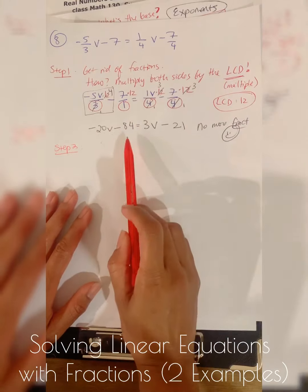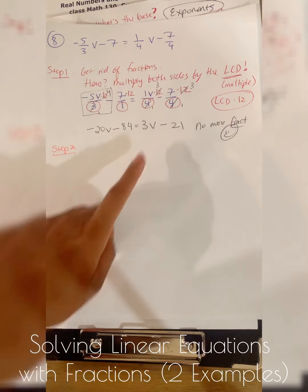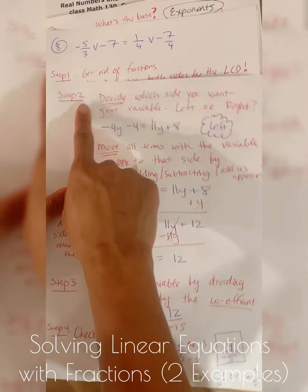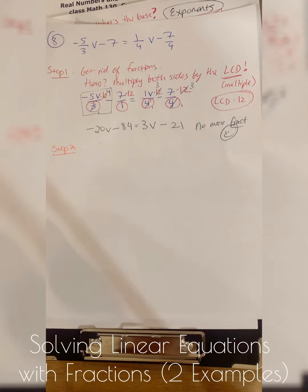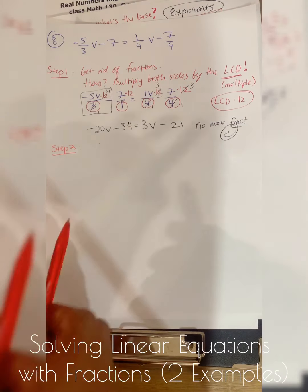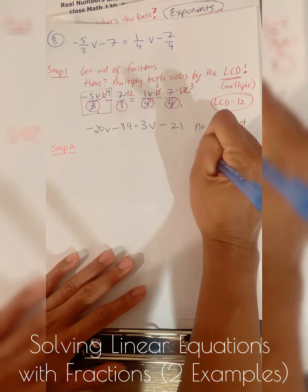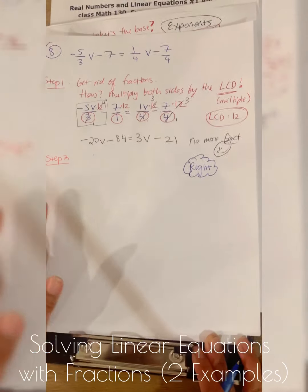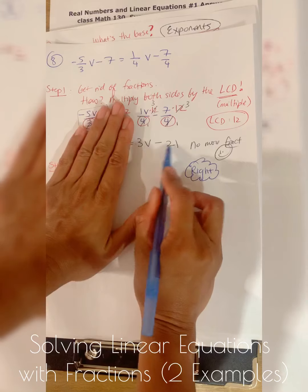Step two: I'm going to decide whether I want my variable v on the left side or the right side. It doesn't matter which side you choose. Since I put it on the left in the previous problem, let's put it on the right this time — just to mix it up.